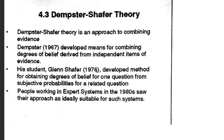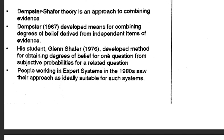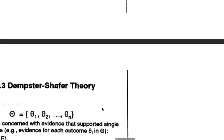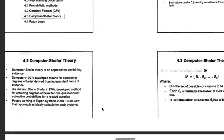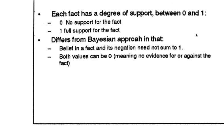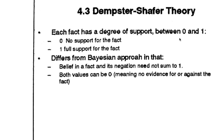Glenn Shaffer in 1976 developed a method for obtaining beliefs, and it is very well accepted in expert systems. Each fact has a degree of support: zero is no support for the fact, and one is full support for the fact.